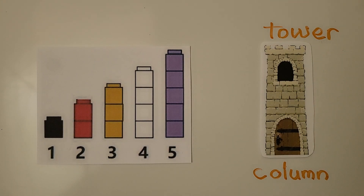And counting order is how we count: one, two, three, four, five.